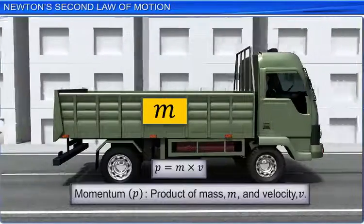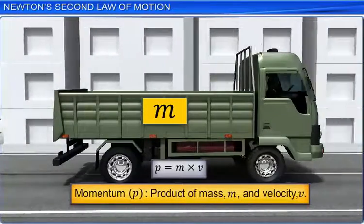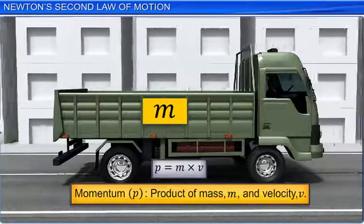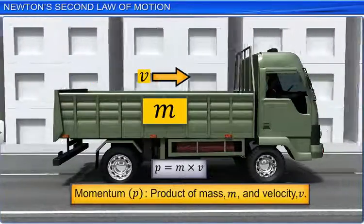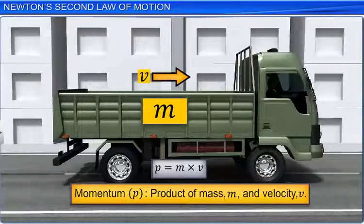The momentum of a body is defined as the product of its mass M and velocity V. Momentum is denoted by P.